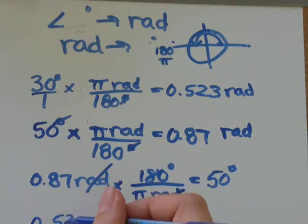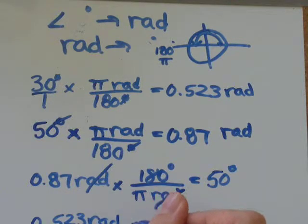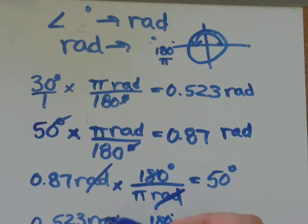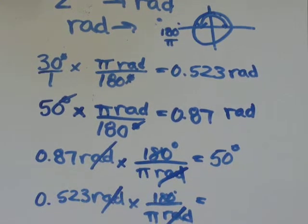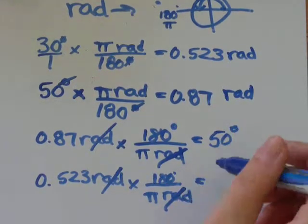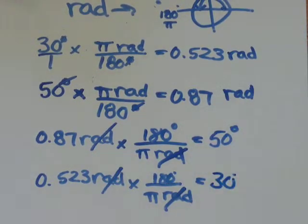0.523 radians times—radians on the bottom so it'll cancel out. Pi radians equals 180 degrees. Cancel out. 0.523 times 180 divided by pi equals 29.989 degrees. So that's close enough to 30 degrees for me.